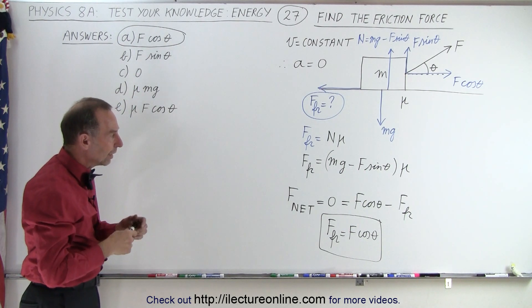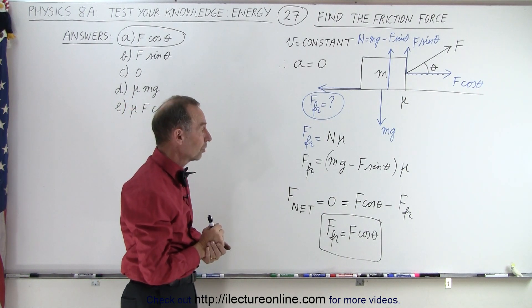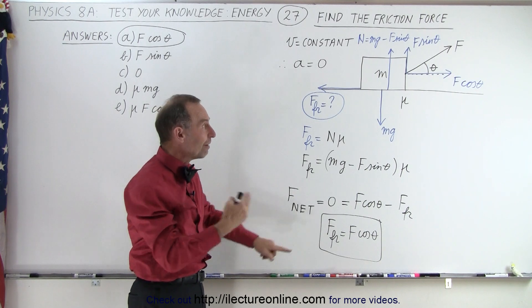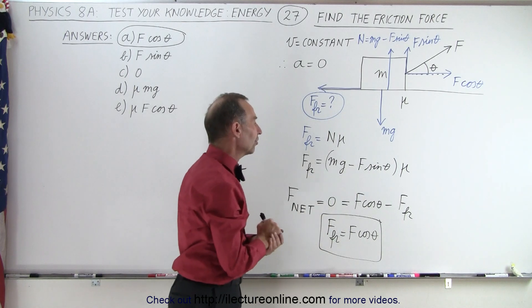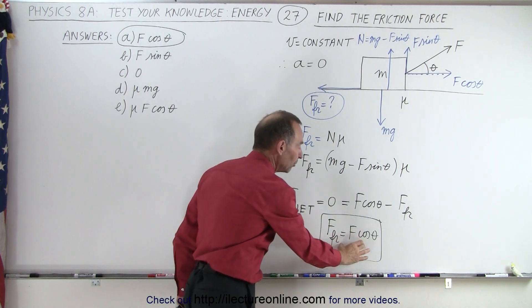This gives you the actual friction force if F cosine theta is less than mg minus F sine theta times mu. So this will always be the case.